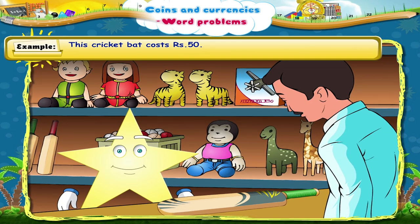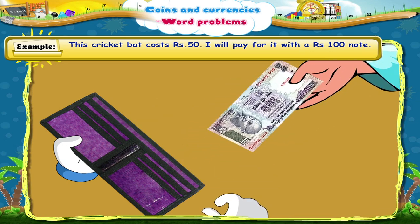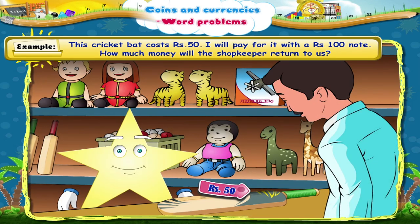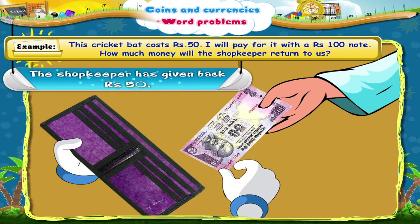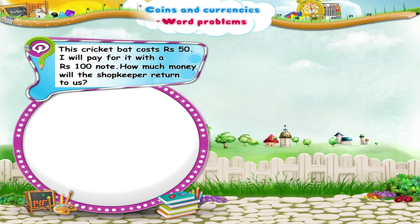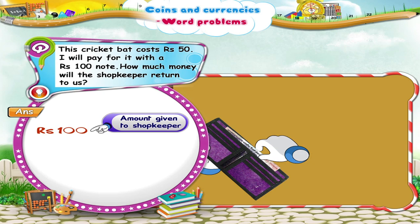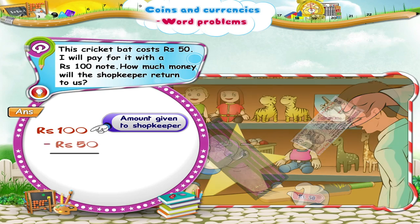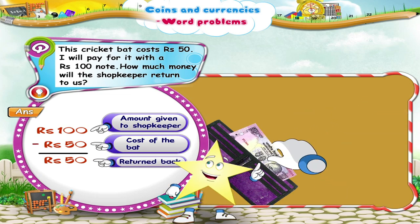Starry, this cricket bat costs rupees 50. I will pay for it with a 100 rupee note. How much money will the shopkeeper return to us? Look, he has given us back a 50 rupee note. Do you know why? From the rupees 100 that we gave the shopkeeper, we subtract the cost of the bat, which is rupees 50, and get rupees 50 returned.